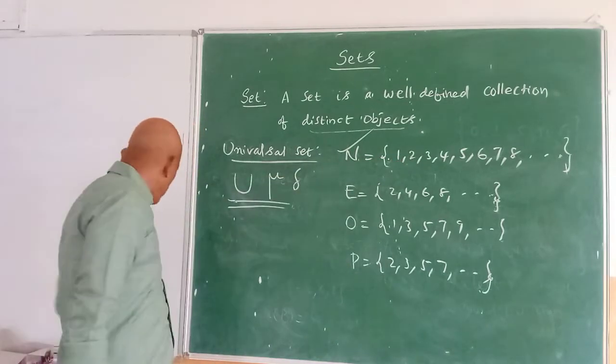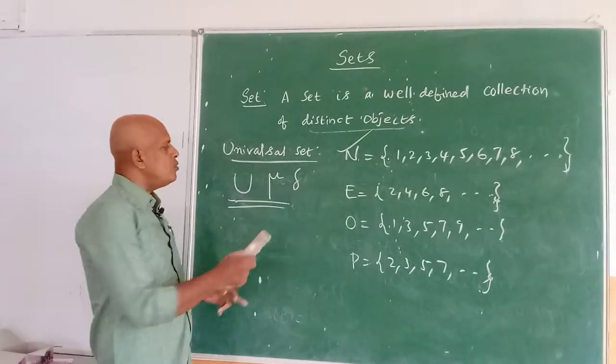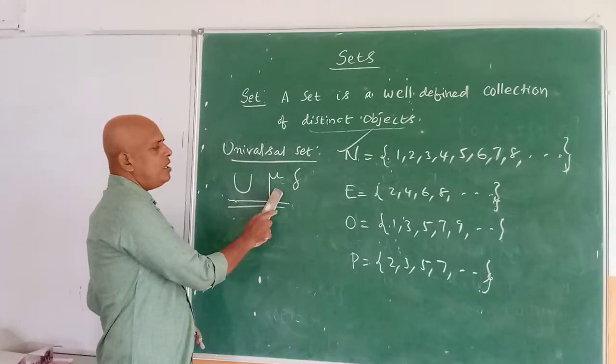Next, this universal set is represented with U, mu, or epsilon. Mostly it will be represented with U, capital letter U and mu.